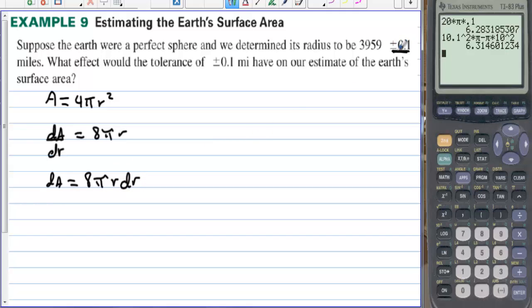Now the change in the radius is going to be the error that we could possibly have. So this is equal to 8 pi times the radius which is 3,959 and then times the possible error which is .1.